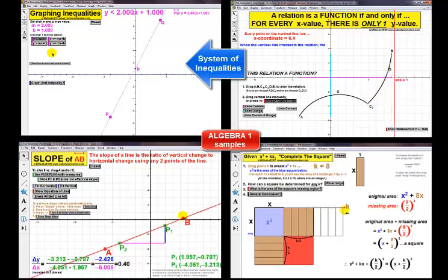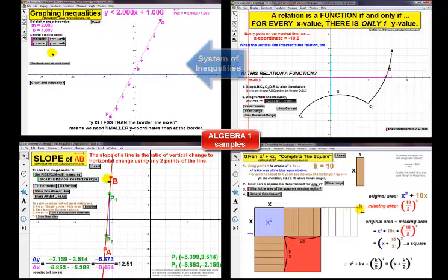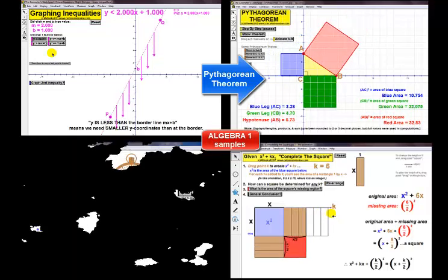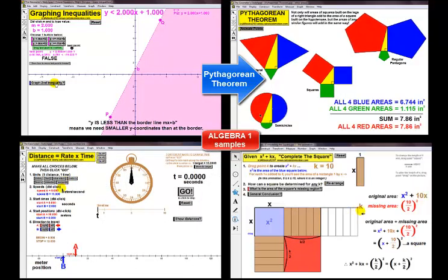Graphing a system of inequalities can be practiced step by step. The Pythagorean theorem pages not only demonstrate this theorem, but also include proofs by various people throughout history.